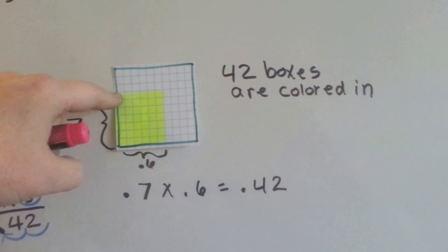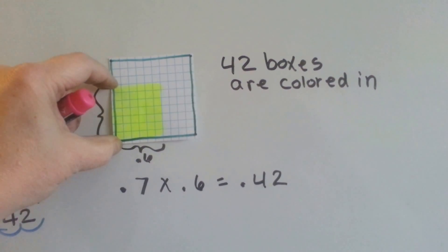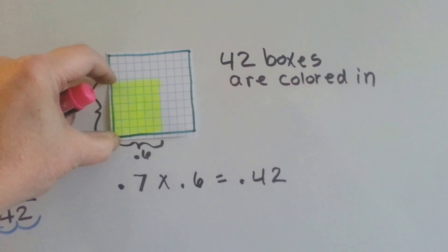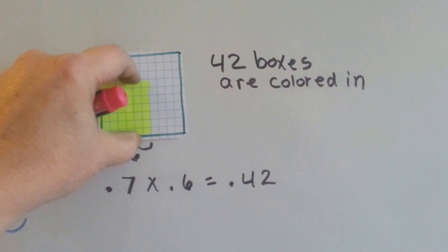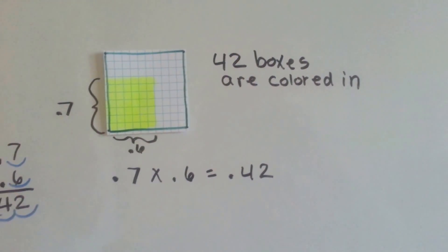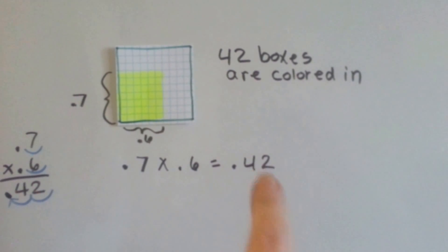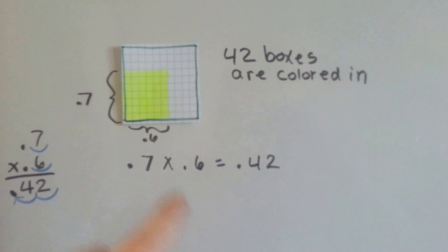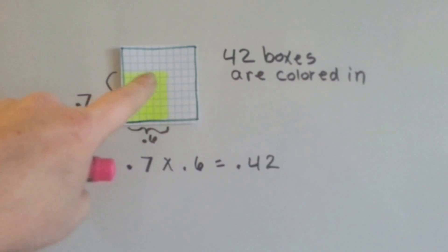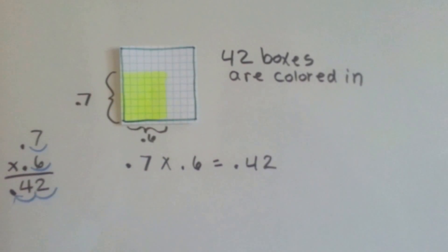If we stop here, then from here to here is 7 tenths, and we can do them 6 times. That way there's 42 boxes colored in, and 7 tenths times 6 tenths is 42 hundredths. So that means there's 42 boxes filled in out of these hundred boxes.